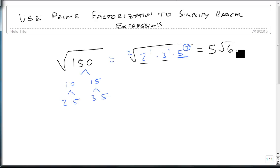So we're looking for what pairs can come out and taking them out but leaving everything else in. And anything that comes out multiplies together. Anything that stays in multiplies together. So let's look at another example.